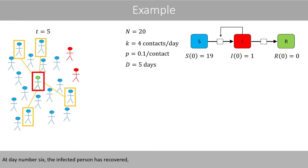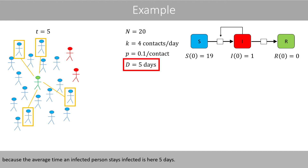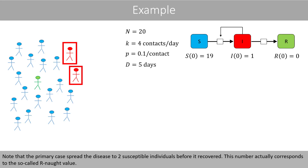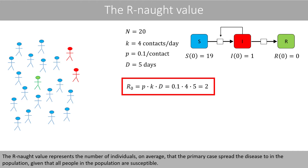At day six, the infected person has recovered, because the average time an infected person stays infected is five days. This means that this person can no longer spread the disease. Note that the primary case spread the disease to two susceptible individuals before it recovered. This number actually corresponds to the so-called R0 value. The R0 value represents the number of individuals, on average, that the primary case spread the disease to in the population, given that all people in the population are susceptible.